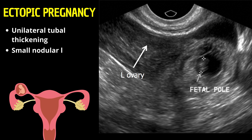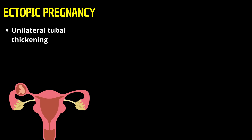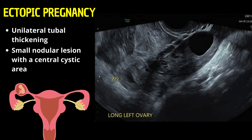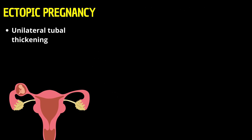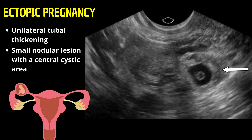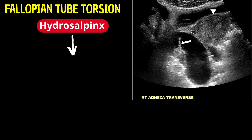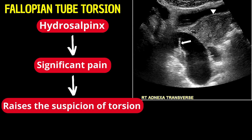In cases where there's unilateral tubal thickening, less cystic in nature, accompanied by a small nodular lesion with a central cystic area, it's essential to evaluate the beta-HCG levels. This is to consider or exclude an ectopic pregnancy from our differential, given its clinical significance and the need for immediate management. In cases of simple hydrosalpinx presenting with acute, severe pelvic pain, one important differential diagnosis to keep in mind is fallopian tube torsion. Prompt recognition and treatment are crucial to prevent serious complications.